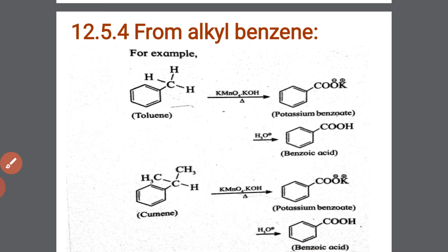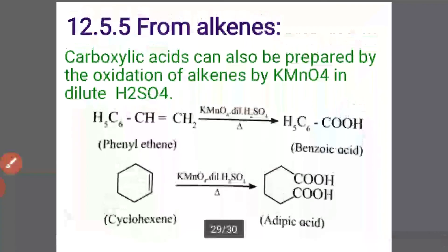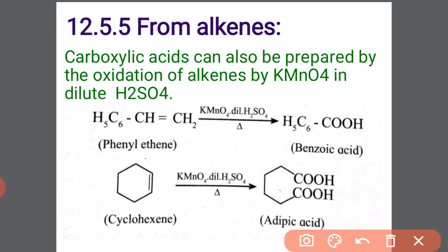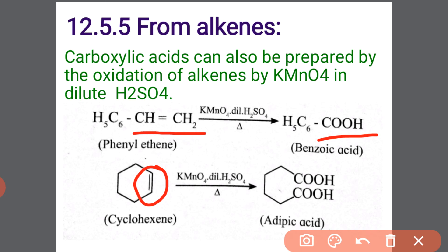Next, from alkanes. Carboxylic acids can also be prepared by the oxidation of alkyl groups using KMnO₄ in dilute H₂SO₄. When we treat the alkyl group with acidic KMnO₄, the entire alkyl portion gets converted into a carboxylic acid group, COOH. Similarly, this part also gets converted into the COOH group.